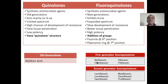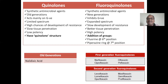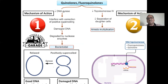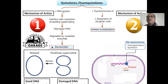So here, first generation fluoroquinolones: norfloxacin, ciprofloxacin, ofloxacin, tafloxacin. Second generation fluoroquinolones: levofloxacin, lomefloxacin, sparfloxacin, moxifloxacin, gemifloxacin, prulifloxacin — like that you have to practice a number of times. All quinolones and fluoroquinolones have the same mechanism of action. Very wonderful point for you — you don't need to worry about different mechanisms.